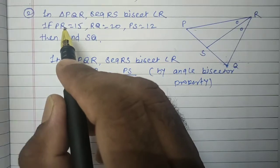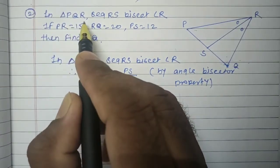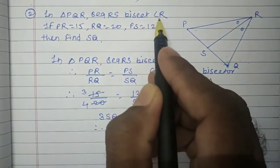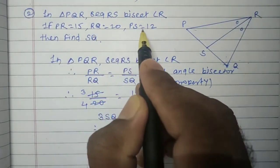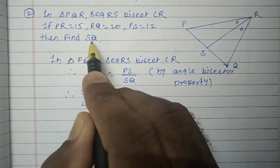Take another example. In triangle PQR, segment RS bisects angle R. If PR equals 15, RQ equals 20, PS equals 12, then find SQ.